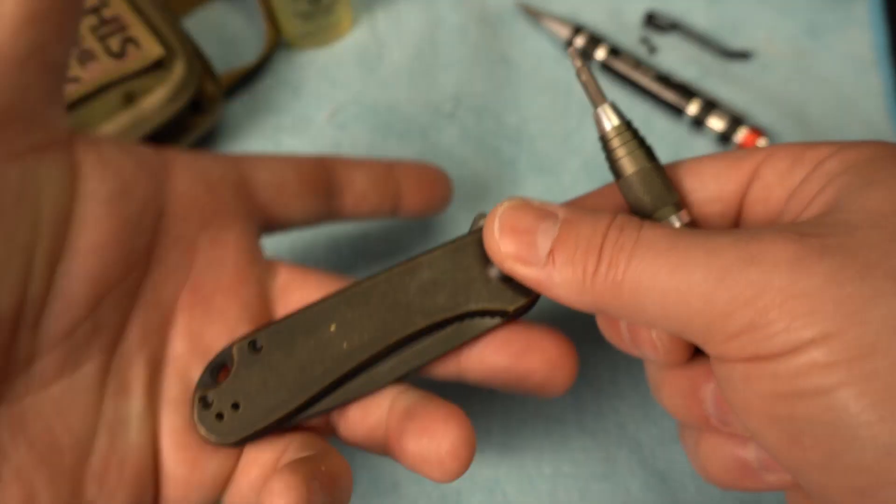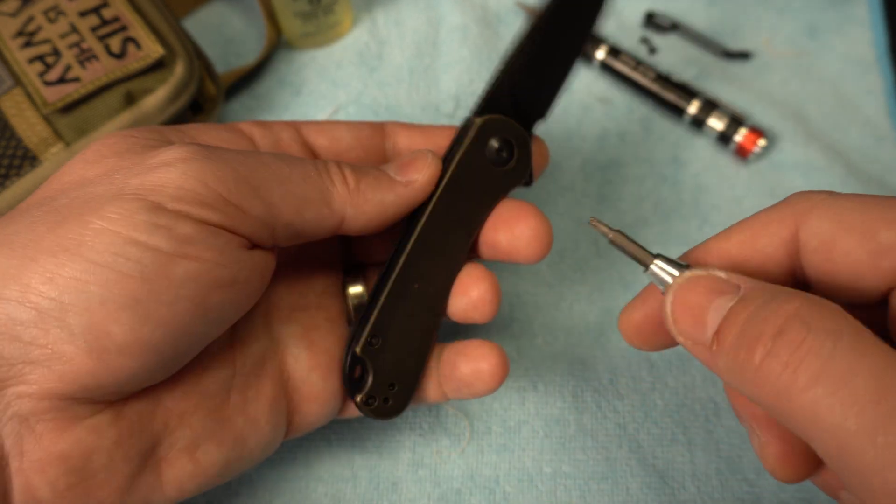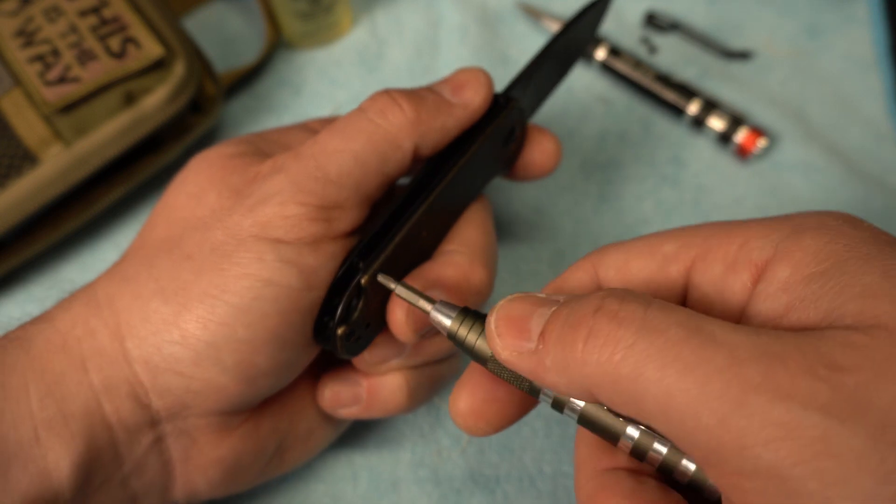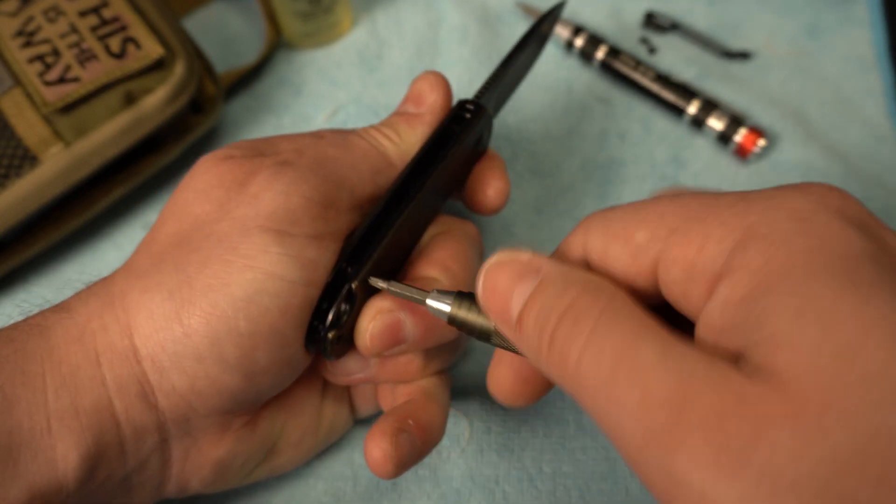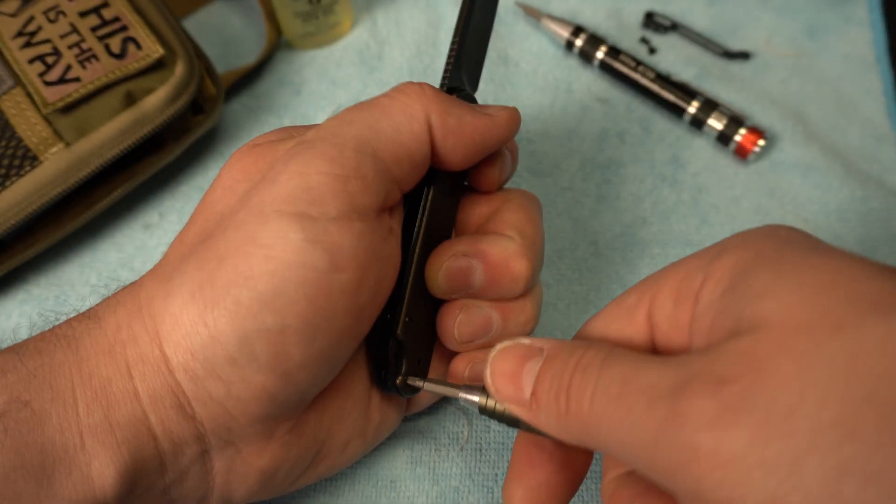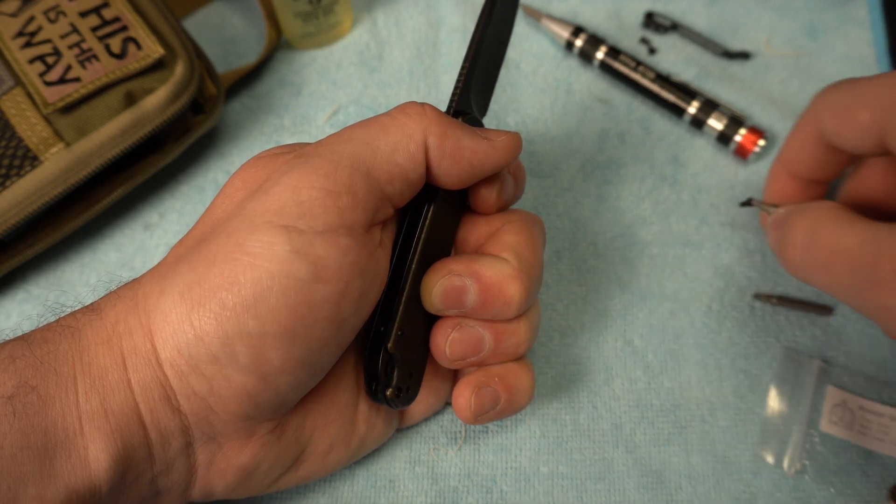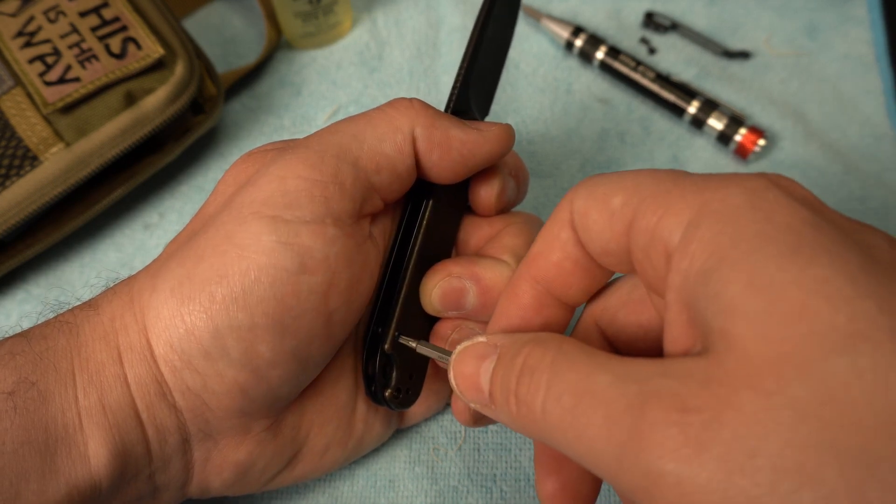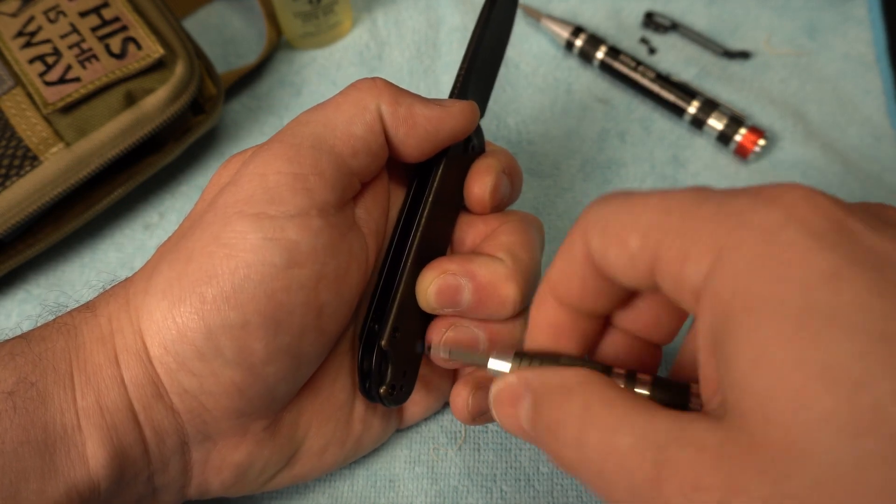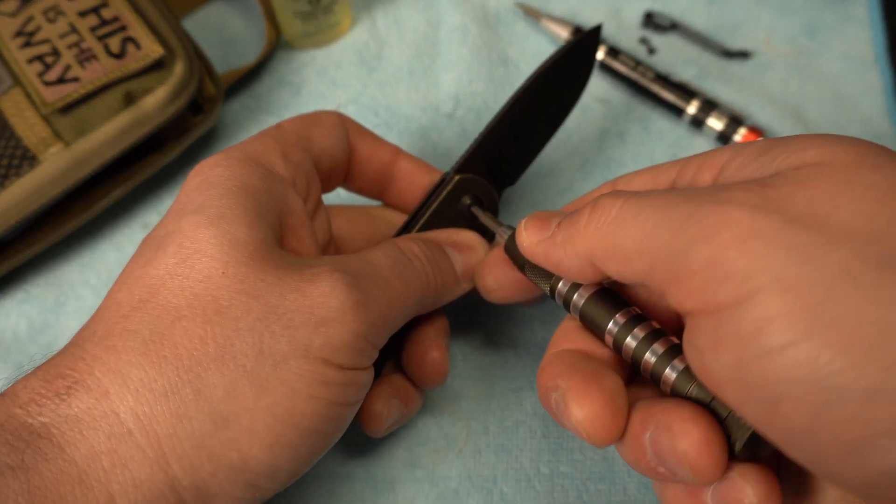I'm going to go ahead and get the lock out and remove all of the hardware on the non-show side, which is opposite of the Civivi logo there. I will not time lapse this for you guys in case you need to see this. I really take for granted that some folks might actually be tuning in and want to see the whole process from beginning to end.